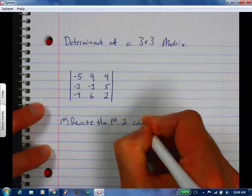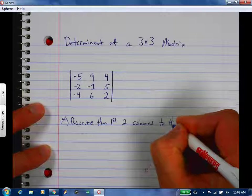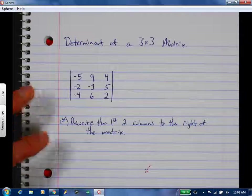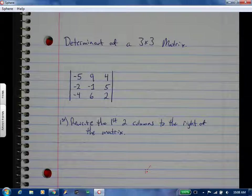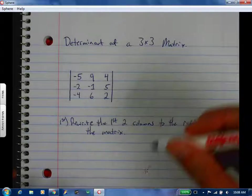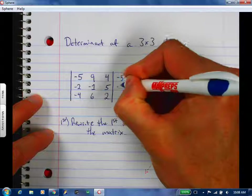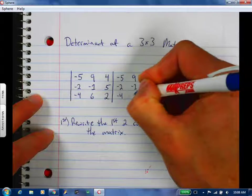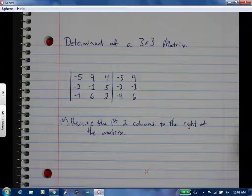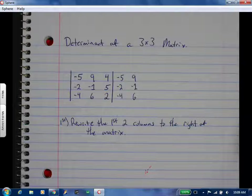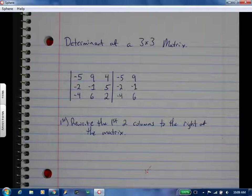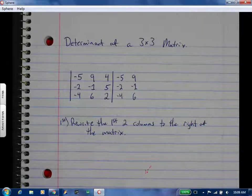So we're going to rewrite the first two columns to the right of the matrix. Easiest step. You're going to take those first two columns and just rewrite them over on the right-hand side.